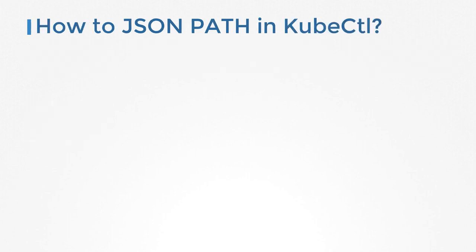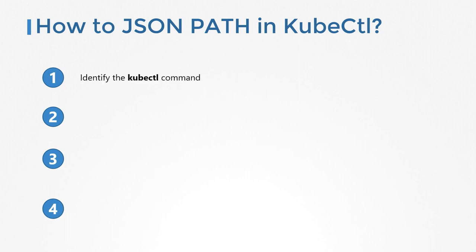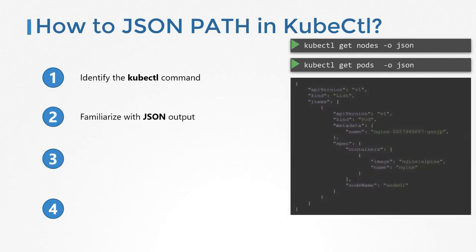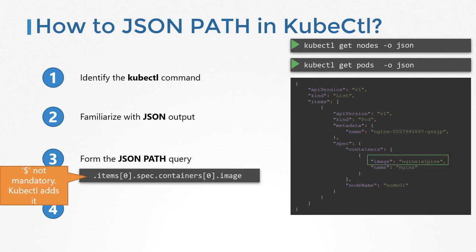In order to get started with JSON path in kubectl, you must follow four steps. First, identify the command that gives you the required information in raw format — for example, kubectl get nodes for node information, or kubectl get pods for pod information. Once you identify the command, inspect its output in JSON format by adding -o json. Look through the structure of the JSON document and form the JSON path query that retrieves the required information. For example, to get the image: .items[0].spec.containers[0].image. Finally, use the query with the -o jsonpath option and pass in your JSON path query encapsulated within single quotes and curly braces.